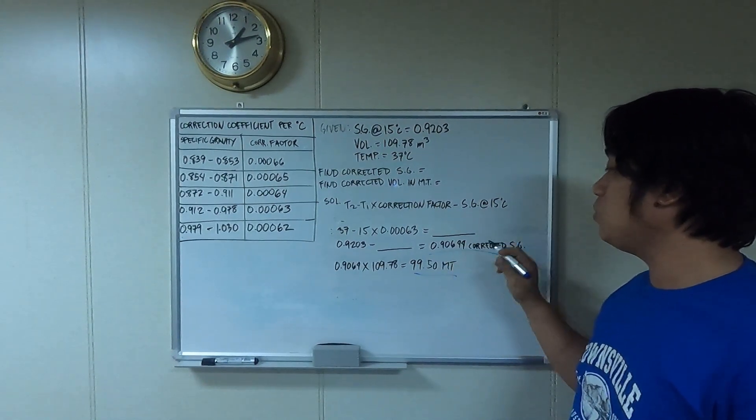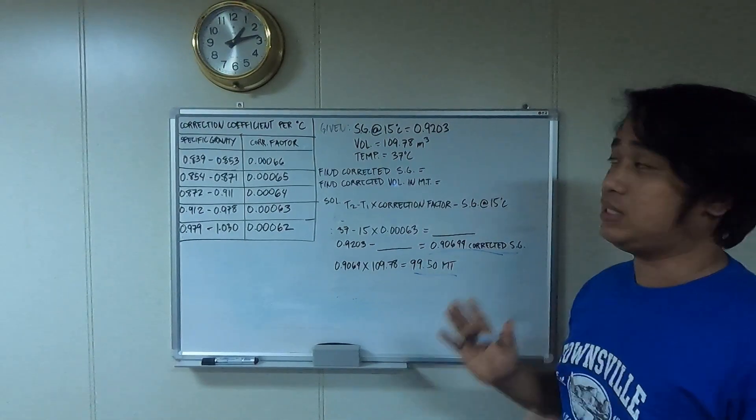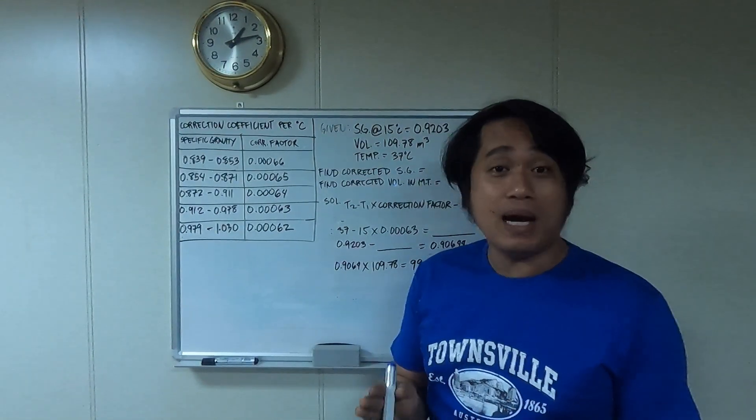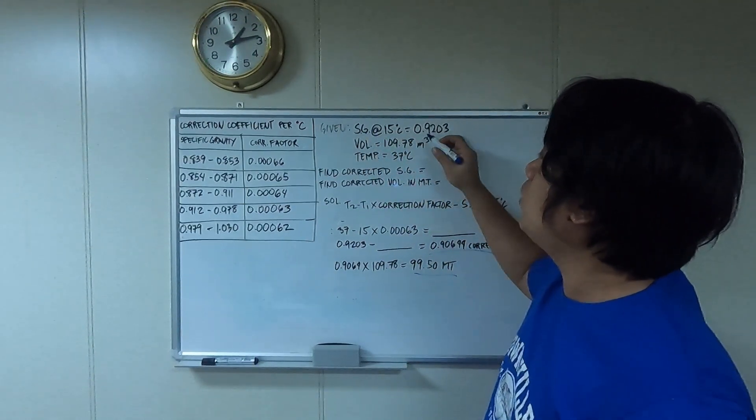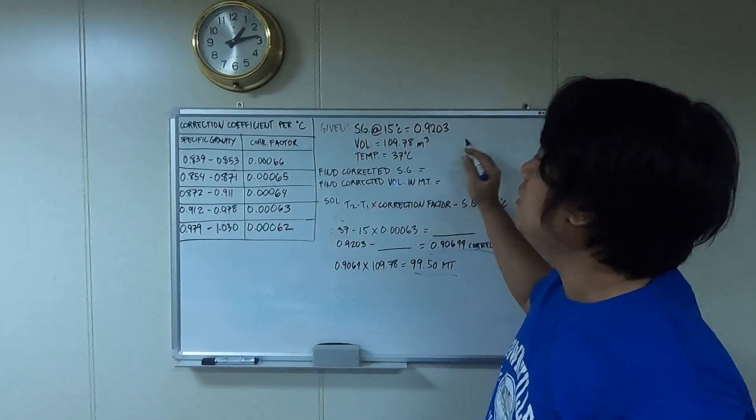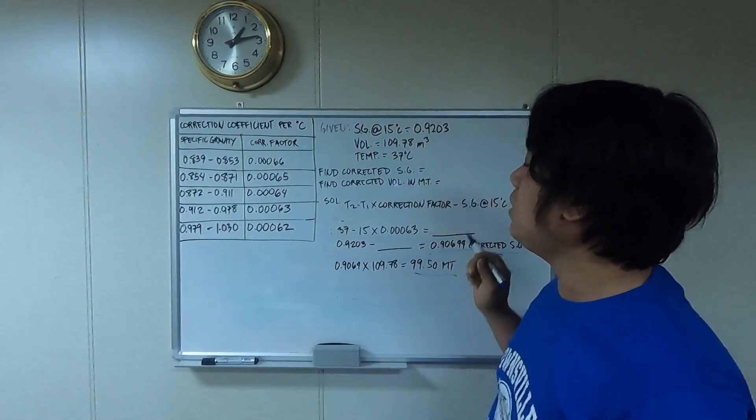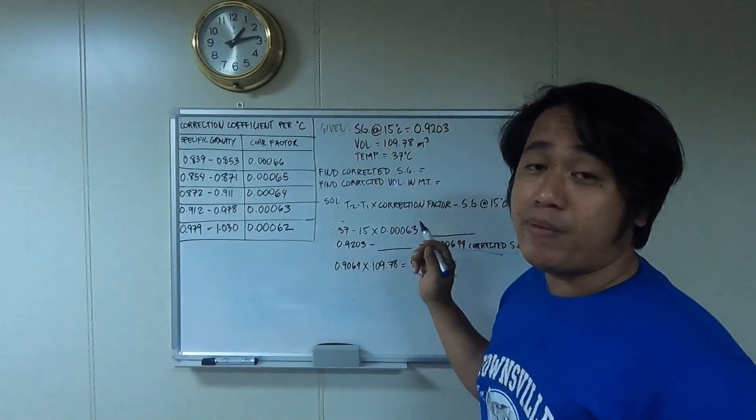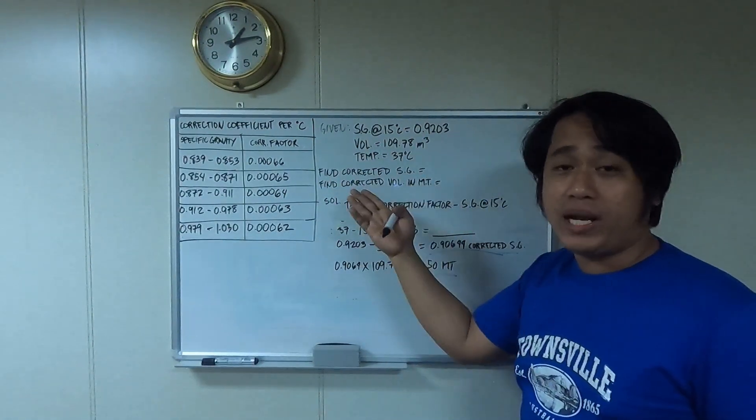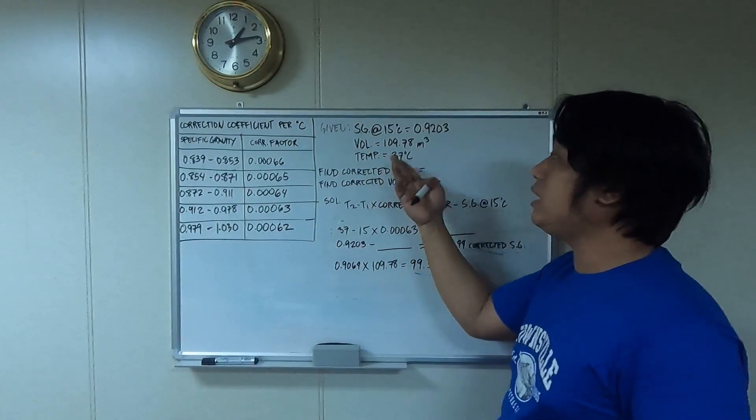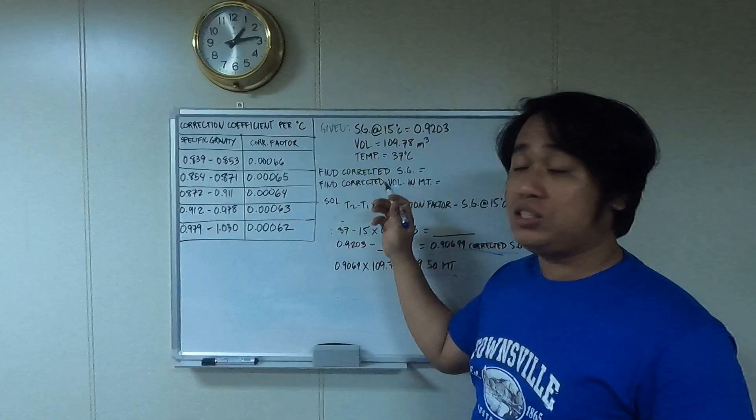We're going to find out how to get the 0.9064 for corrected SG and 99.51 metric tons. We have a given of SG at 15 degrees of 0.9203, and the volume is 109.78 cubic meters, and the temperature is 37 degrees. We are finding the corrected SG and the corrected volume in metric tons.